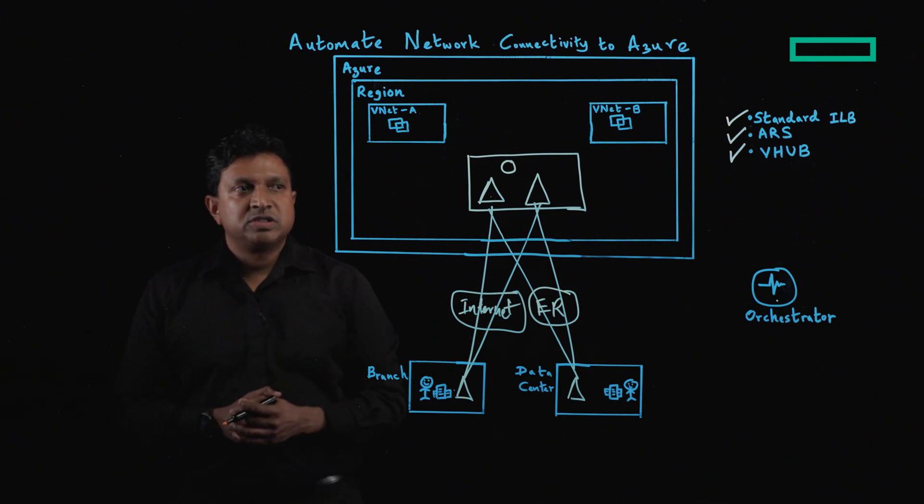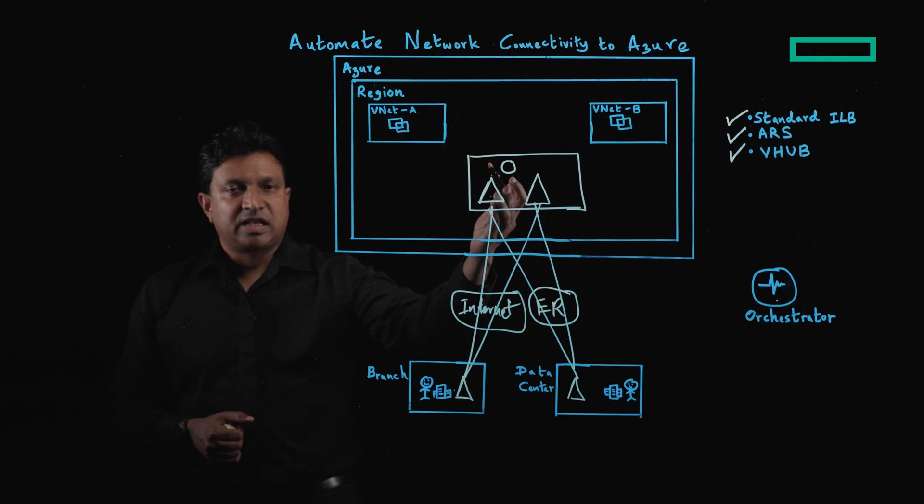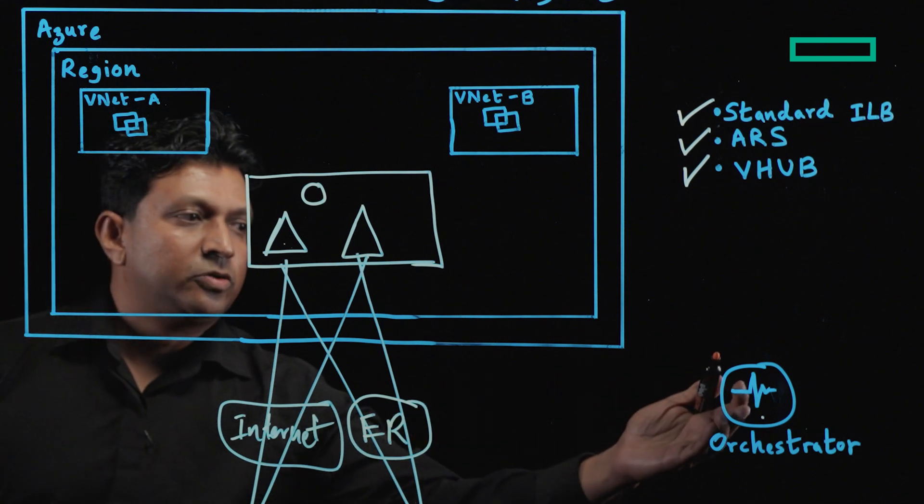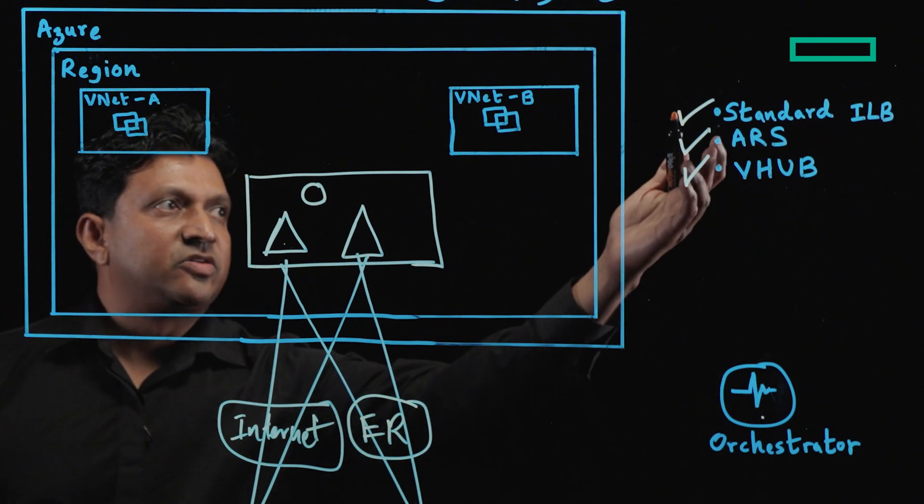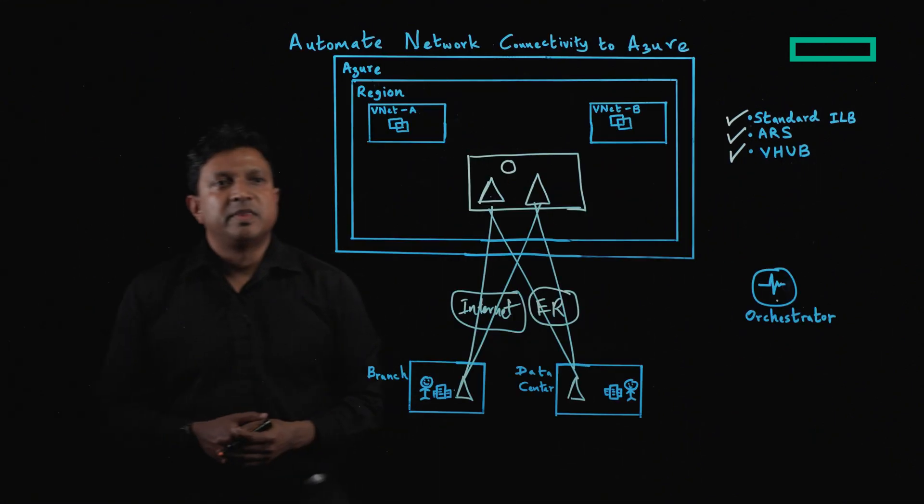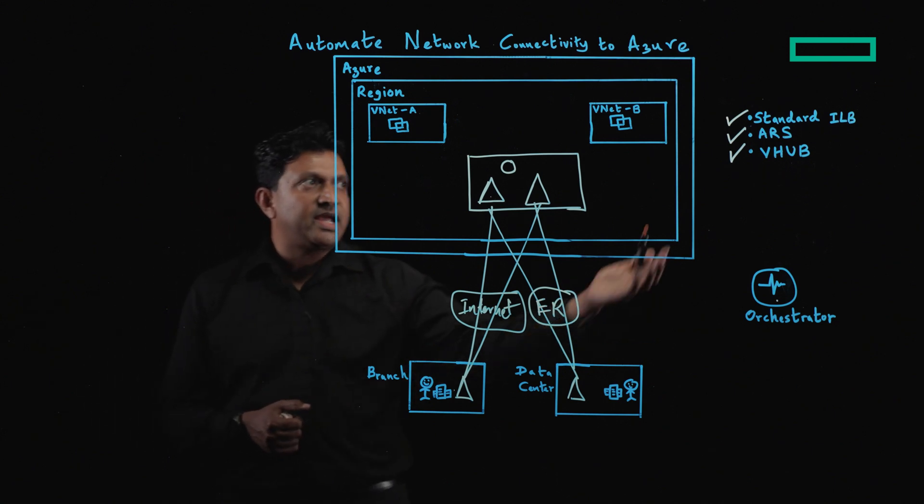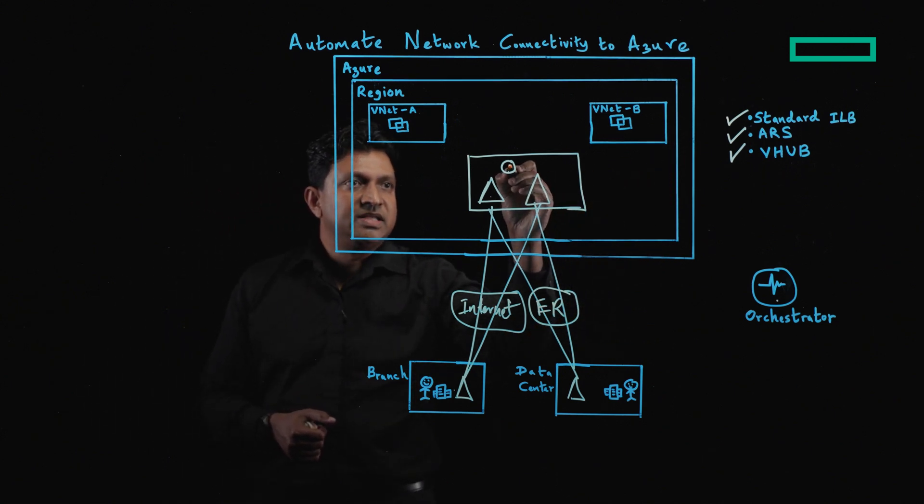If you want dynamic routing between the EdgeConnects in the cloud and Azure networking service, then you can go to the orchestrator and create an Azure route server. Now, as you may know, Azure route server supports BGP, and the capability that we have added into the orchestrator allows you to create an Azure route server inside the Transit VNet,